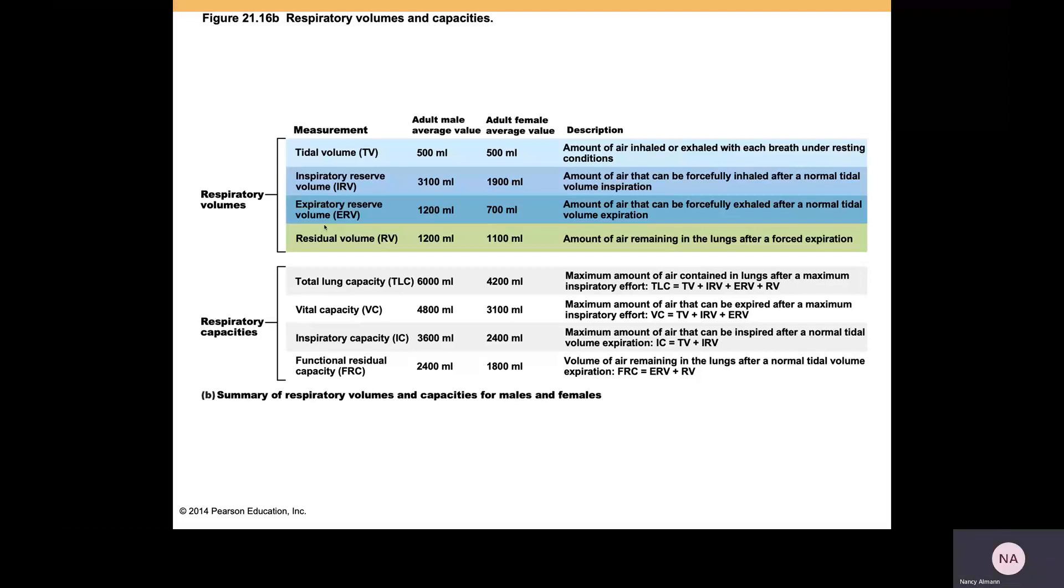So, the respiratory capacities. Total lung capacity is maximum amount of air contained in lungs after maximum inspiratory effort. So that's going to be tidal volume, inspiratory reserve, expiratory reserve, and residual volume. Vital capacity will be tidal volume, IRV, and ERV. Notice that residual volume is not included in that.